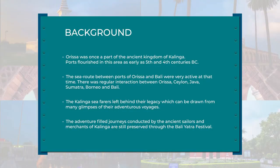Orissa was once a part of the ancient kingdom of Kalinga, as we have studied in our history lessons. The ports of these areas flourished as early as the 5th and 4th centuries BC. The sea route between the ports of Orissa and Bali was very active at this time. There was regular interaction between Orissa, Ceylon, Java, Sumatra, Borneo and Bali. The Kalinga seafarers left behind their legacy, which can be drawn from the many glimpses of their adventurous voyages. Though the legacy has no prominent historic records in written material, the various glimpses of their adventure can still be seen in the state. The adventure-filled journeys of the ancient sailors and merchants of Kalinga are preserved today through the Bali Yatra festival.